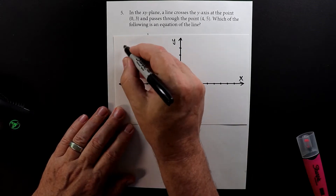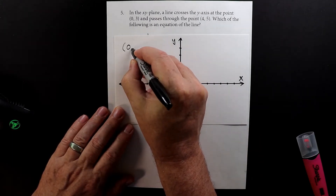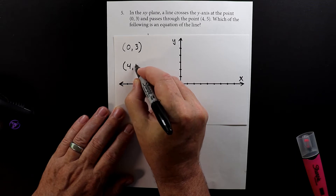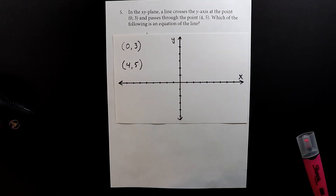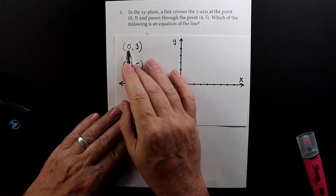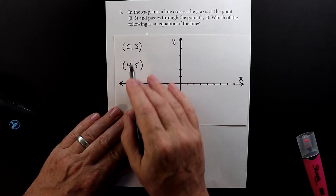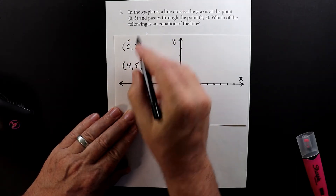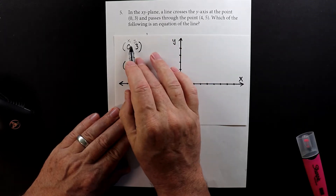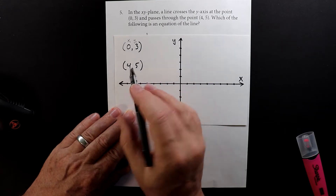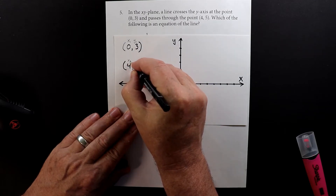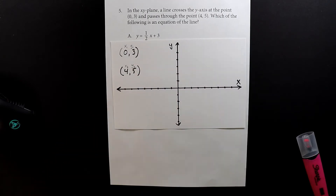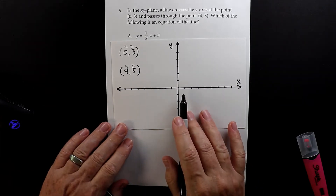We have two points here: point (0, 3) and a second point (4, 5). I'm going to put little notes here because we're going to need this later. This is your x and this is your y. Since we have two points, I'm going to call this x1 and y1 for the first point, and x2 and y2 for the second point.